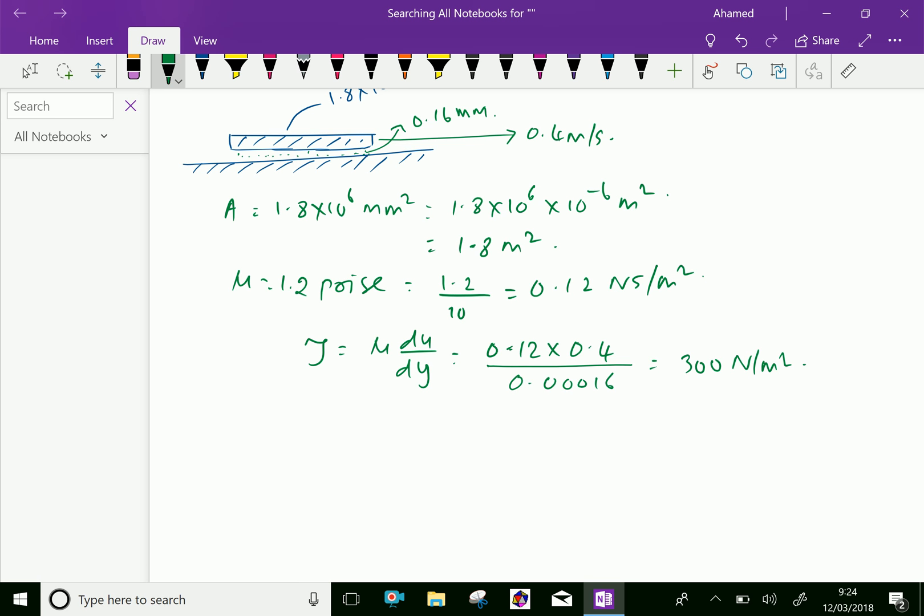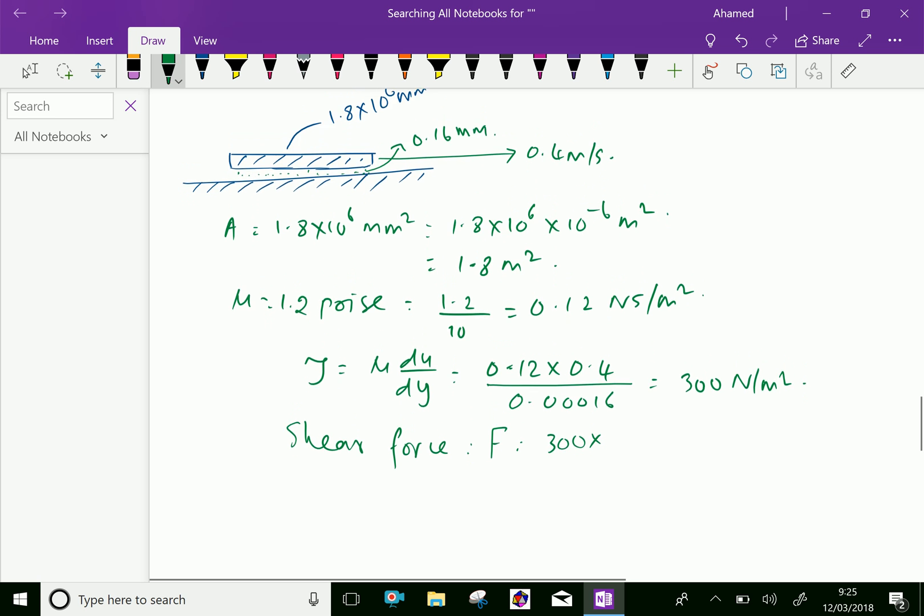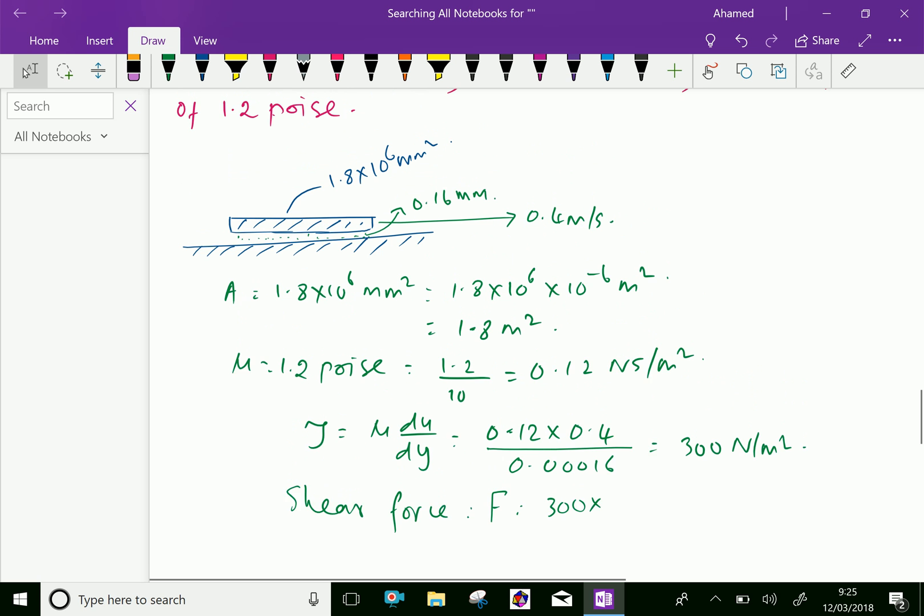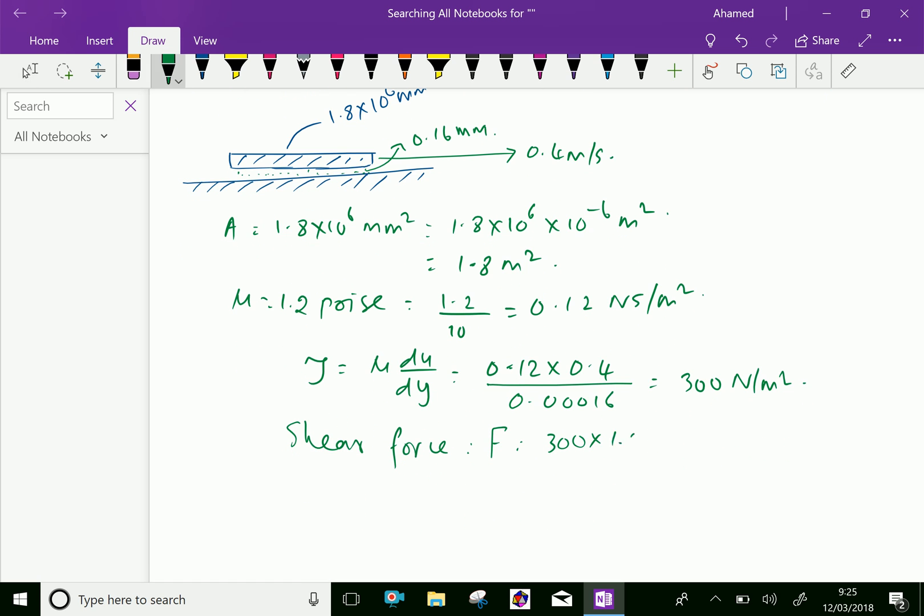Now, shear force. Shear stress is given. Therefore, shear force F equal shear stress into area. Shear stress is 300 and area of the plate is 1.8 meter square, which is equal 300 into 1.8 equal 540 Newton.